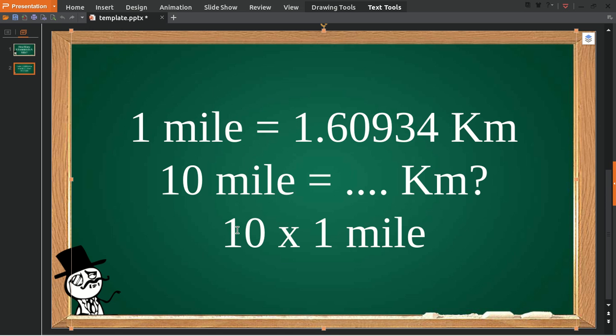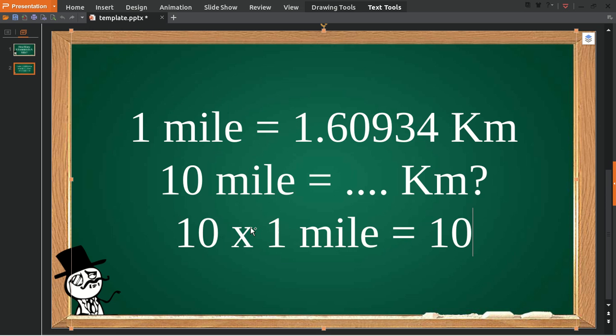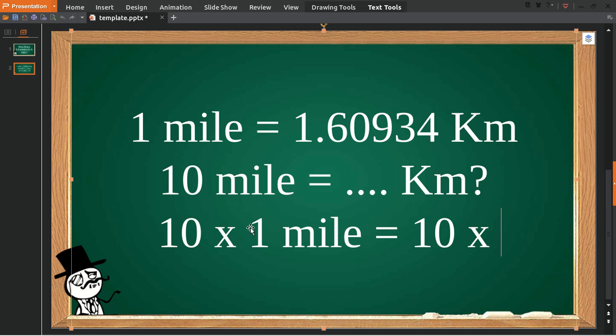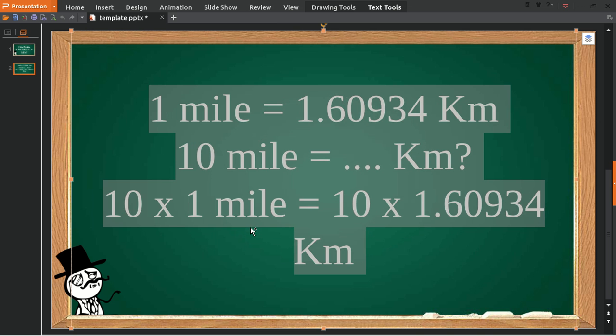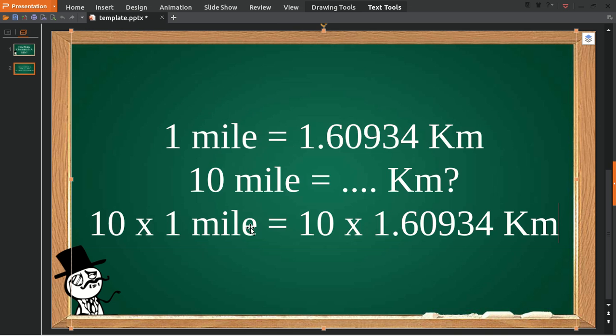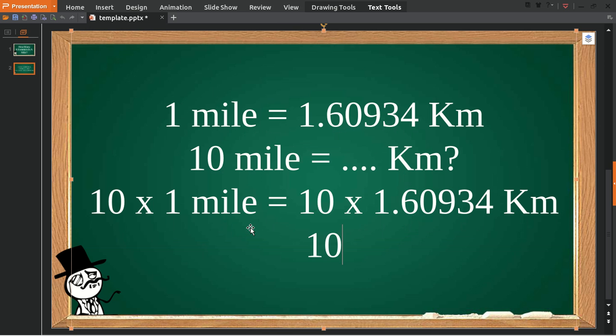Since 10 multiplied by 1 equals 10 miles, we then multiply it by 1.60934. So 10 miles equals 10 multiplied by 1.60934, which equals 16.0934 kilometers.